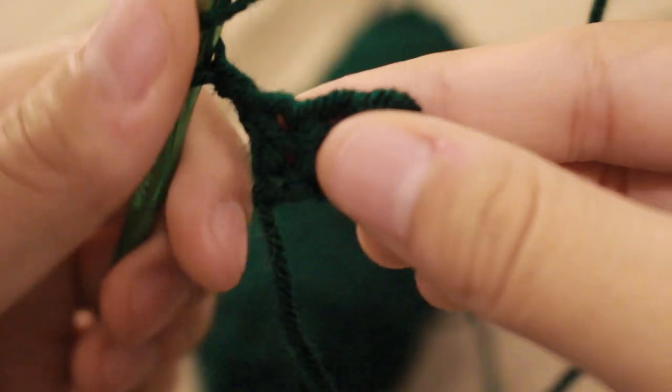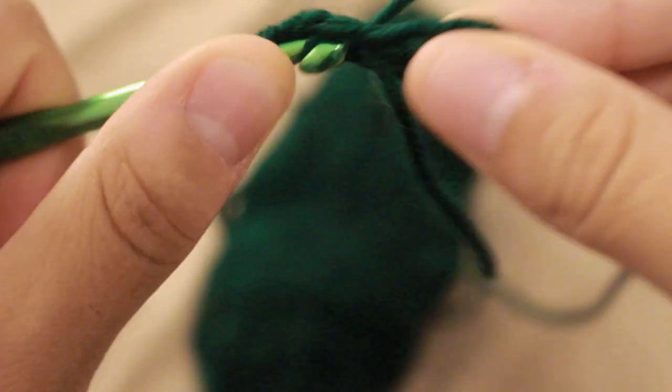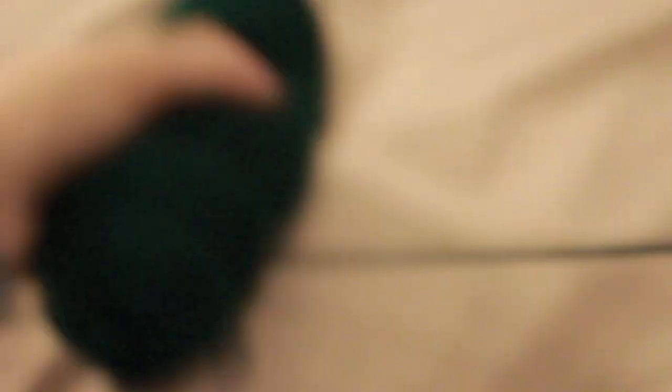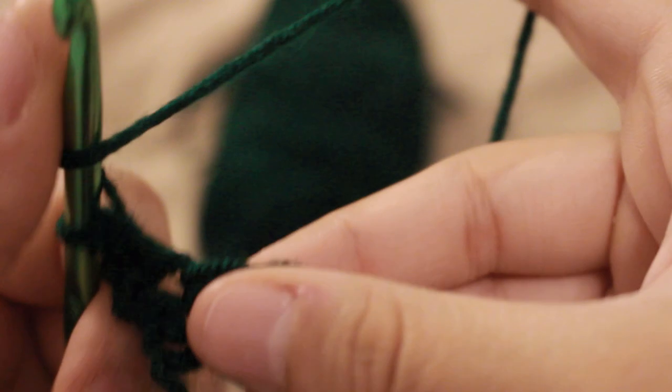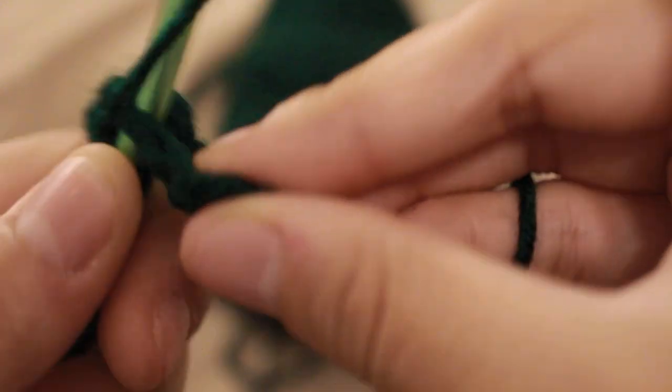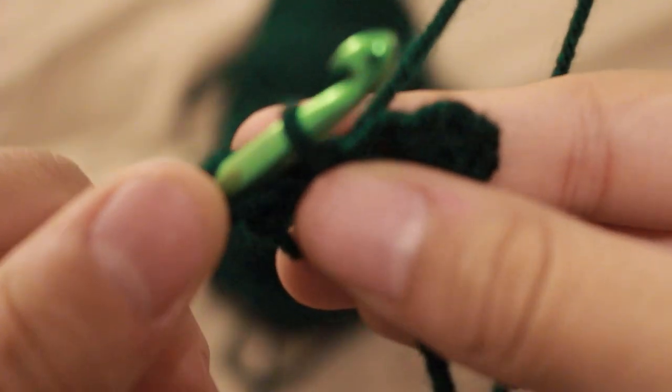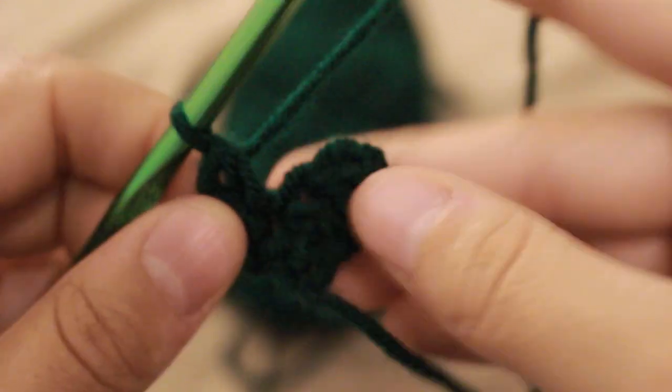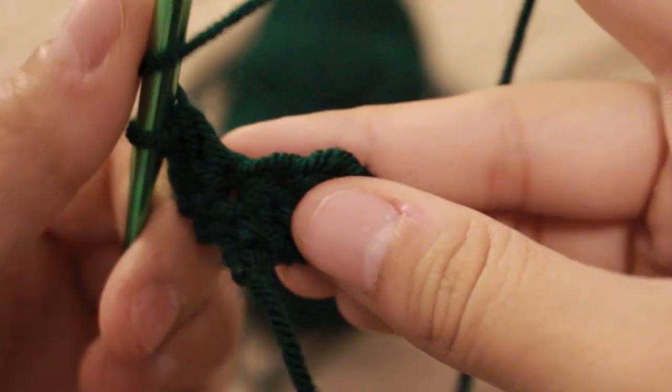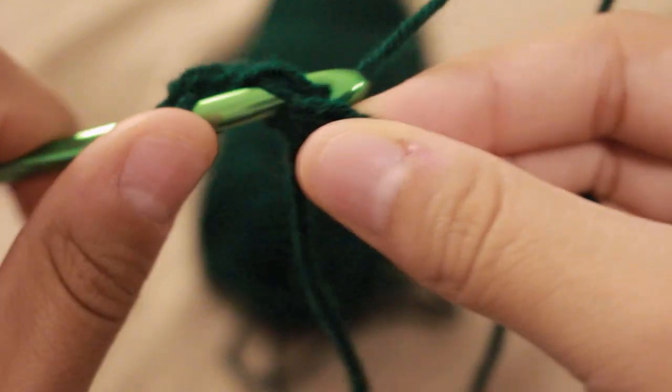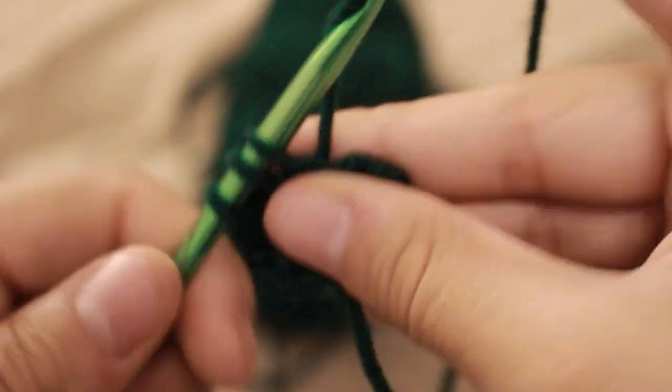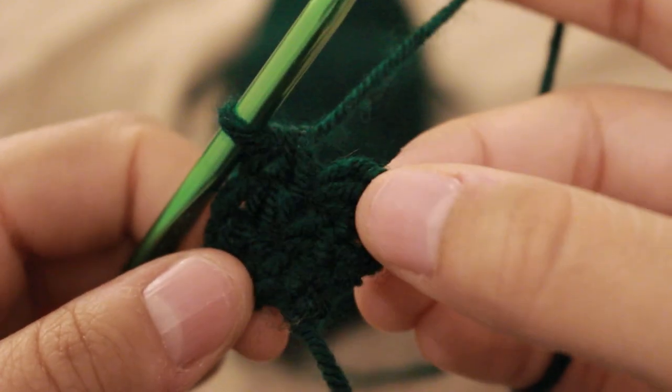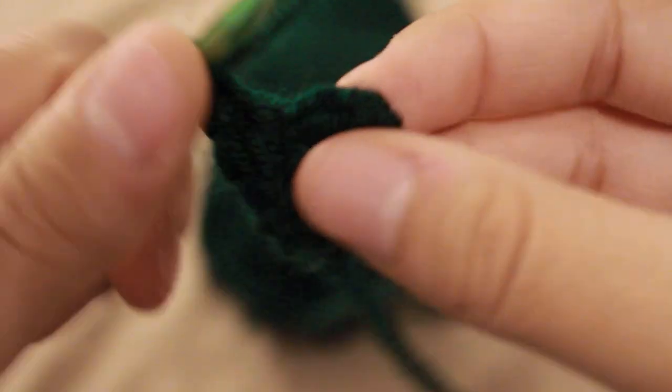For the second row, you're going to do two half double crochets into the first stitch space. Then, in the second, you're going to do one half double crochet, and in the final one, you're going to do two half double crochets, and then chain one and turn your work.